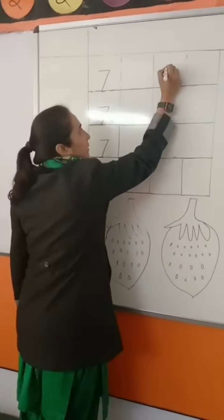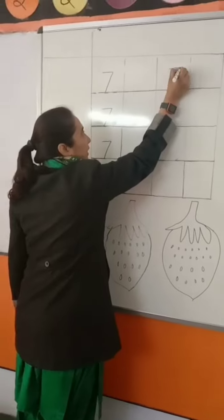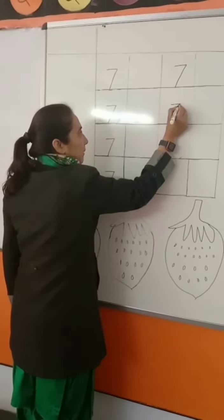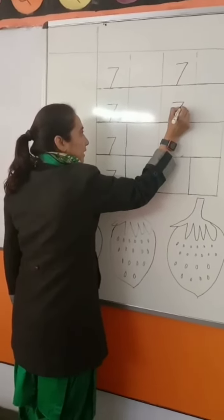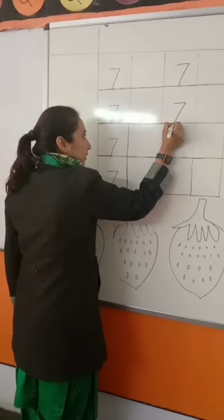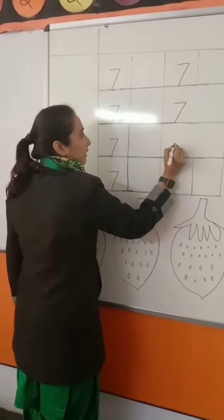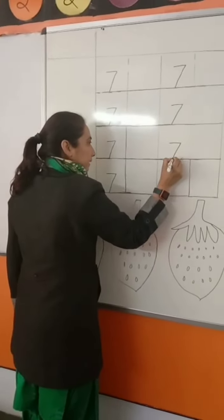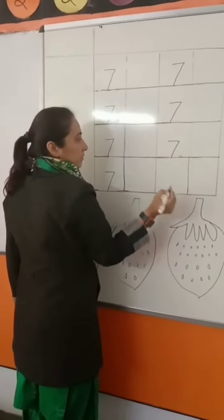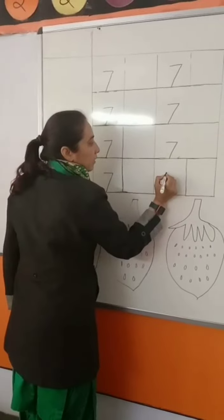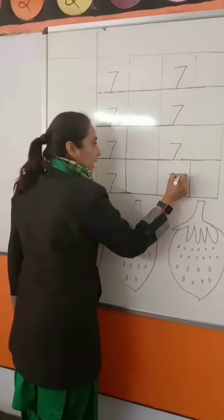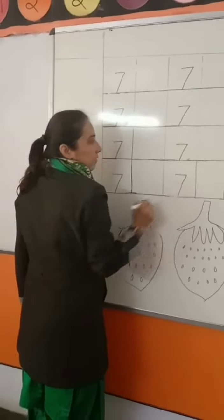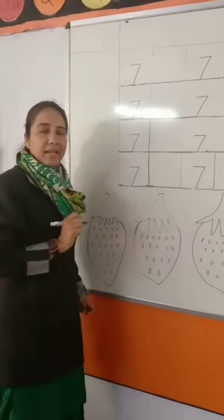So which number is this? Yes, number seven. Which number is this? Yes, number seven. So again, sleeping line and slanting line. Thank you.